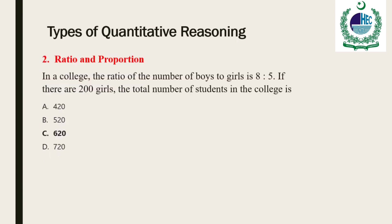Ratio problems are word problems that use ratios to relate the different items in the question. A ratio is defined as the ordered pair of numbers A and B, written A/B where B does not equal zero, and a proportion is an equation in which two ratios are set equal to each other. Have a look at the mentioned example. The main things to be aware of for ratio problems are: first, change the quantities to the same unit if necessary; second, write the items in the ratio as a fraction; and third, make sure that you have the same items in the numerator and denominator.